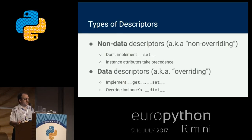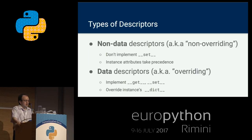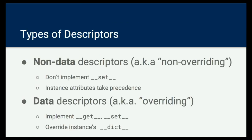Let's classify descriptors. There are two types with subtle differences between them. We can classify them as data descriptors or non-data descriptors. In terms of implementation, the difference is whether or not they implement `__set__`. If they implement `__set__`, they're also called overriding descriptors, and they will always take precedence over the dictionary of the object. Whereas if they're non-data descriptors, the dictionary of the object takes precedence.